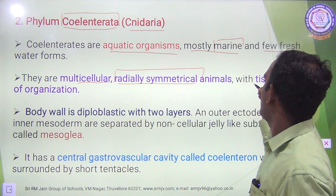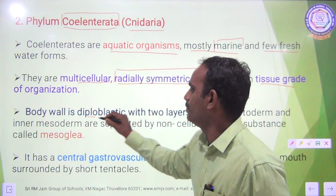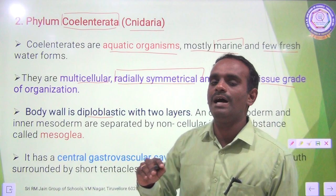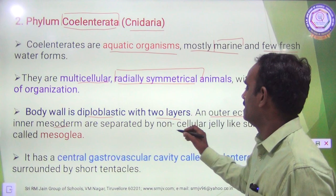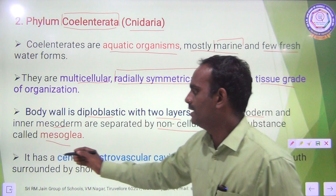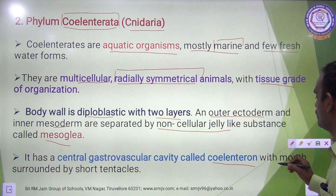The body wall is diploblastic, meaning it is made of two layers — one is ectoderm and another is endoderm. The outer layer is ectoderm and the inner layer is endoderm. In between the ectoderm and the endoderm, there is a non-cellular jelly-like substance called mesoglia. There is a central gastrovascular cavity called coelenteron, with a mouth surrounded by short tentacles.